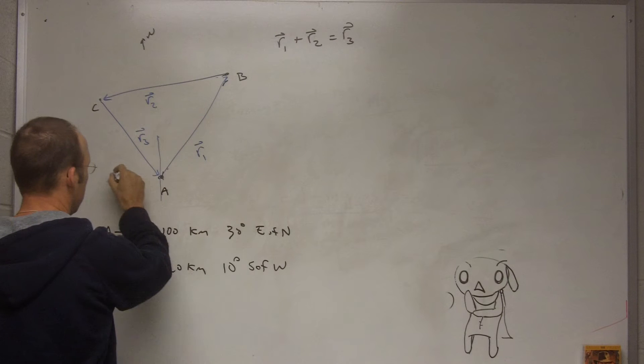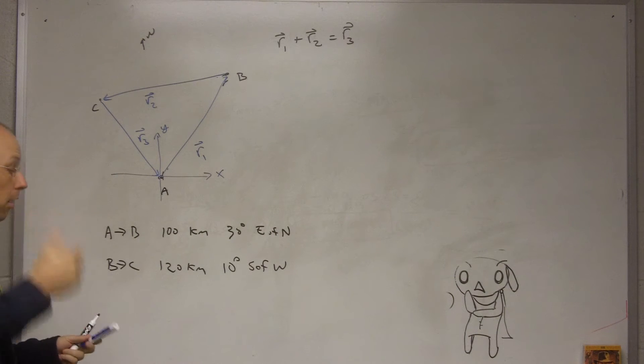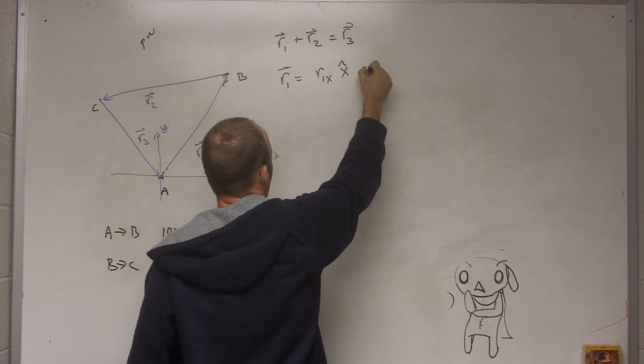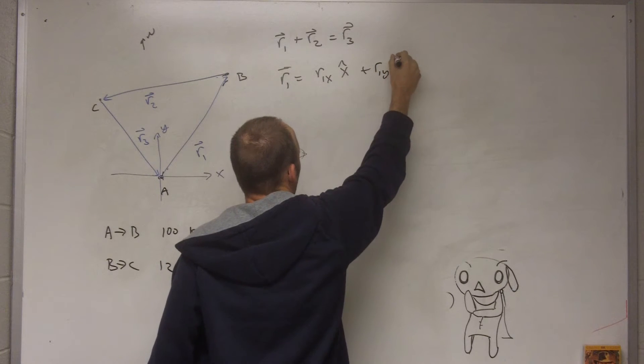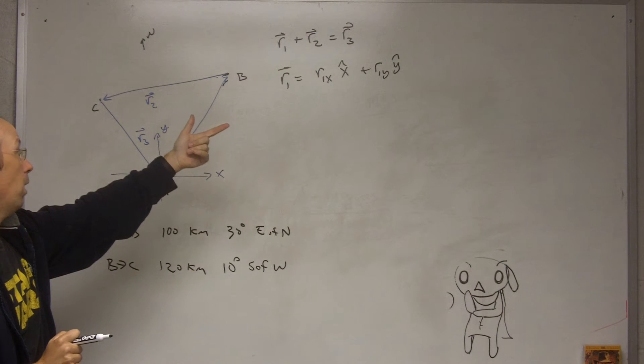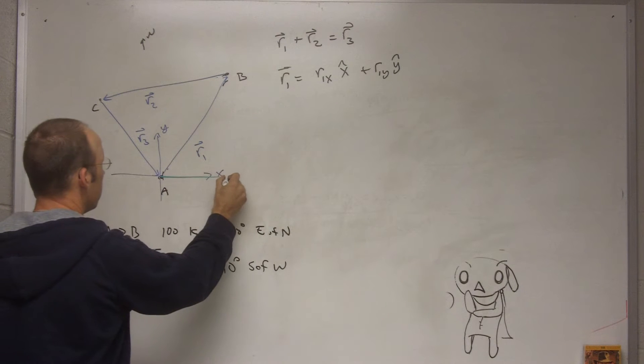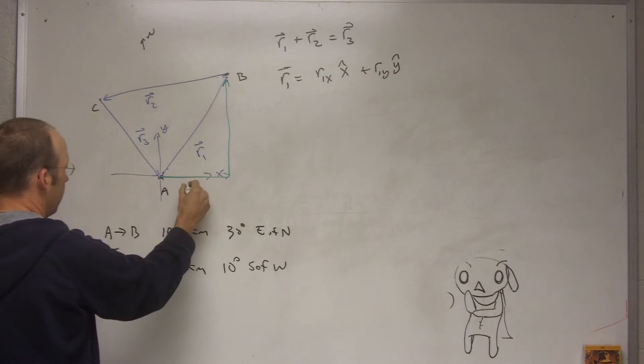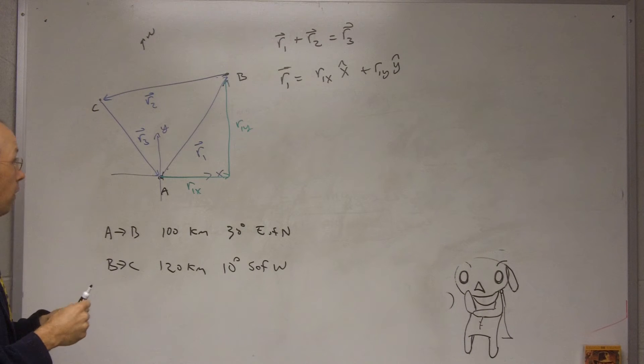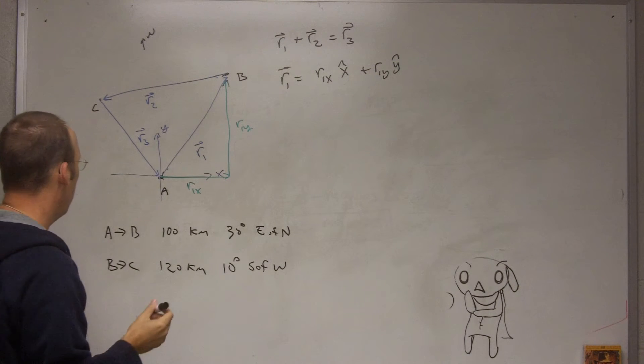So I want to get these vectors r1 and r2, I want to represent them in a different way. So to represent vectors in components I need to have an x and y axis. Let me just say that that's x and that's y. So I want to represent r1. Let's start with r1. I want to say r1 is equal to r1x x-hat plus r1y y-hat, where x-hat is a unit vector in the x direction and y-hat is a unit vector in the y direction. So if I drew that it would look like this, where this is r1x and this is r1y.